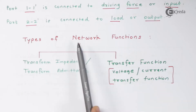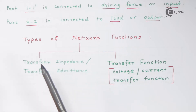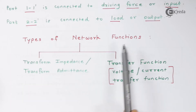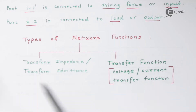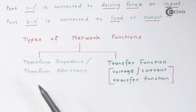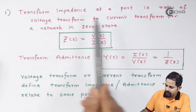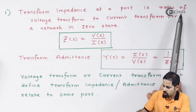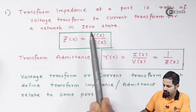Now we will see the types of network functions. We studied one-port and two-port because they will be required here. There are two major types: one is transform impedance and another is transfer function. We will study what is transform impedance or transform admittance. Transform impedance at a particular port is the ratio of the voltage transform to the current transform for a network in zero state.